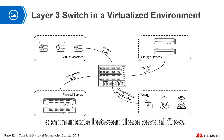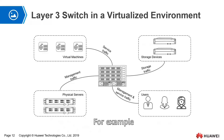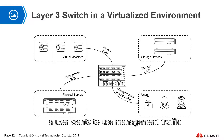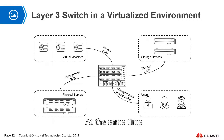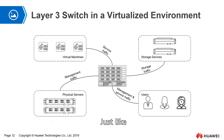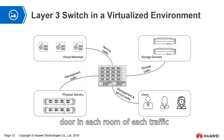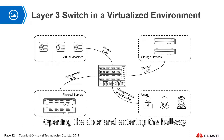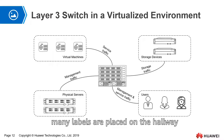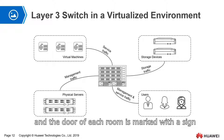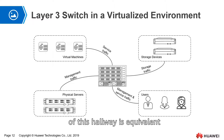However, it is inevitable that these several traffic flows need to communicate with each other. For example, a user wants to use both management traffic and business traffic at the same time. We will use a layer 3 switch to route all traffic — just like using a default gateway. This gateway is set on the layer 3 switch, which is equivalent to opening a separate door in each room for each traffic. Opening the door and entering the hallway, many labels are placed in the hallway, and the door of each room is marked with a sign. The role of this hallway is equivalent to the role of the layer 3 switch.